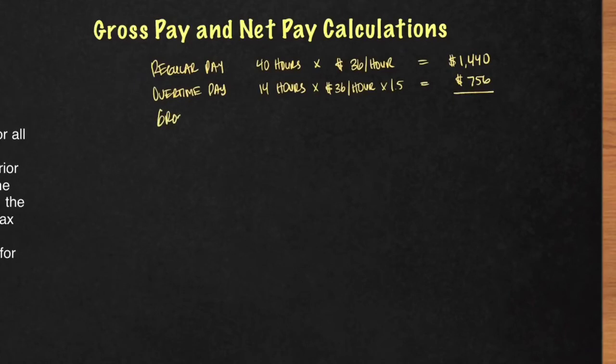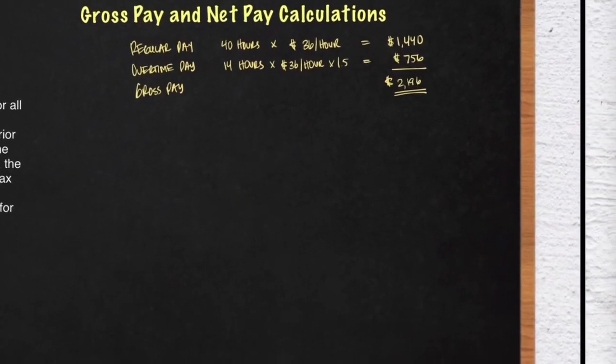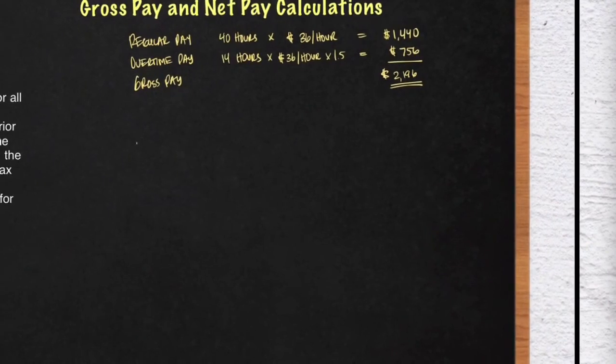Now, when you add the regular pay plus the overtime pay together, that will equate to the gross pay, which in this case is $2,196. And there you have it. Now, let's rewrite our gross pay. We want to keep track of what we're going to be deducting from the gross pay, which again in this case is $2,196.